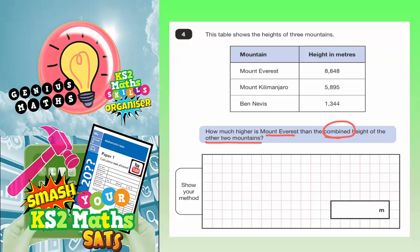So when you combine numbers, that means you add them together. So we need to add together the other two mountains. And the other two, since it's asking us about Mount Everest, the other two must be Mount Kilimanjaro and Ben Nevis.